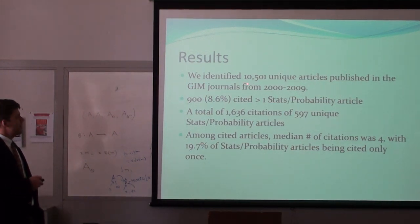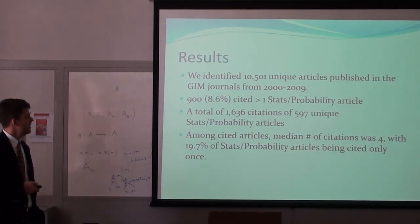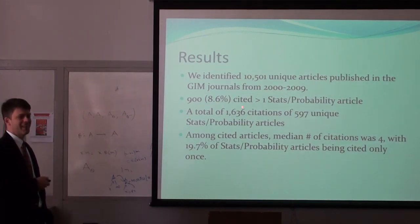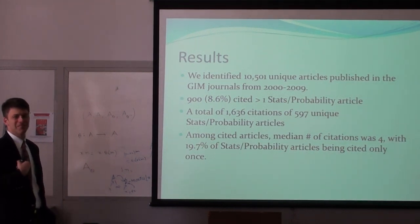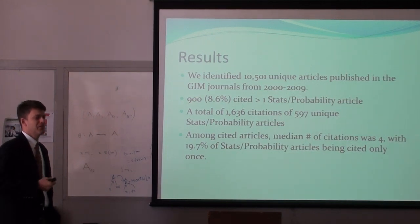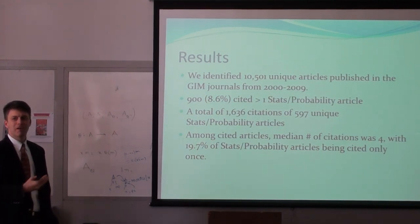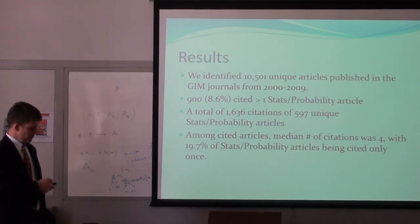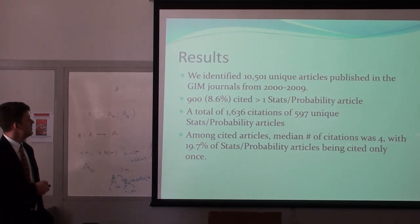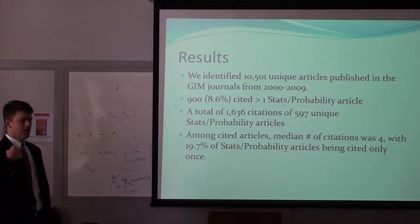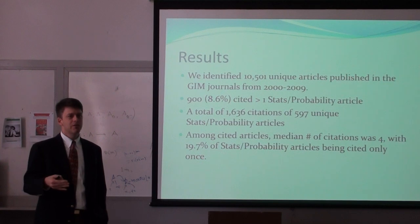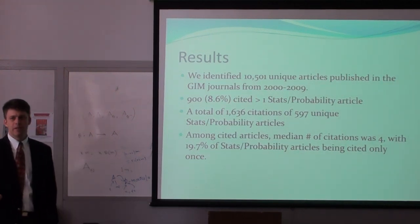We ended up identifying over 10,000 unique articles published in these general internal medicine journals in this decade. A whopping total of 900 of these articles cited a biostatistics or probability article — I thought that was a little bit low, and that was part of the reason why I was doing the study. I want to urge people to do relevant work and also to promote their work so that it gets used. We ended up with a total of 1,636 citations.